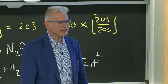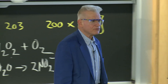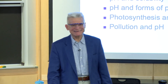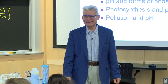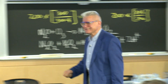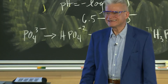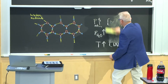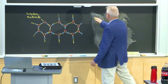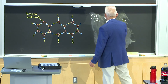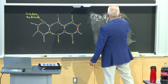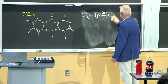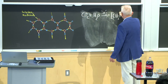What about photosynthesis and pH? The equation for photosynthesis is CO2 plus water, with sunlight, giving oxygen and sugars (CH2O)n. Does the pH go up or down during photosynthesis? Sean said up, Alec said down — let's do a little experiment.